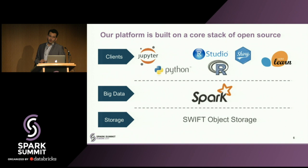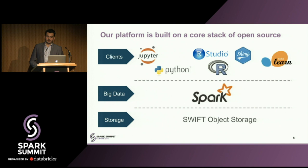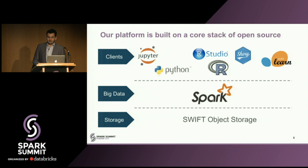Many of these platforms are built on a core stack of open source. On the client side, you see Jupyter, R Studio, and languages like Python and R. You have frameworks like scikit-learn, XGBoost, and TensorFlow. On the big data side, you often see Spark — you'll still see some Hadoop, but mostly in legacy environments. On the storage side, you see object storage, Parquet, and Avro files. This is where executives start saying: if it's all available, why can't we just download it and start using it? And the answer, of course, is that you need everything else around it.